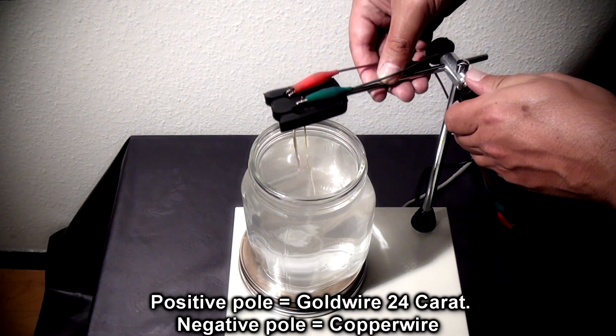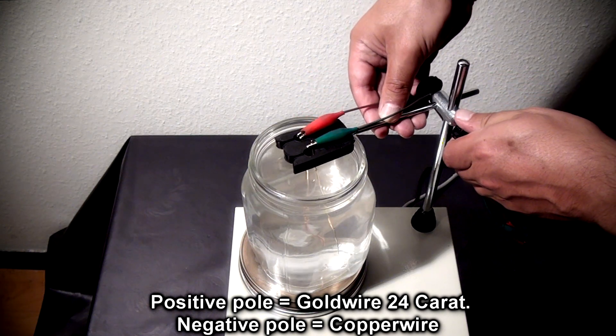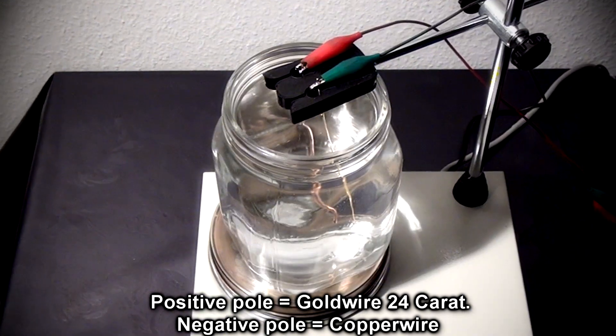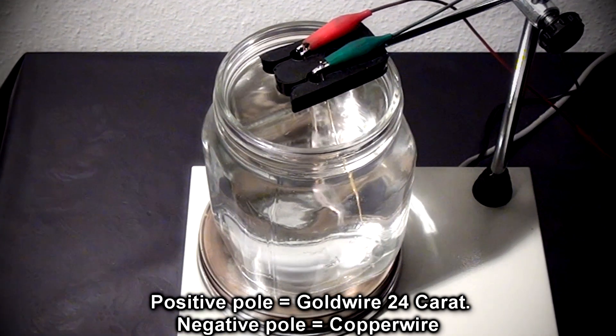On the negative pole is a 12 centimeter long and 2 millimeter thick copper wire. On the positive pole is a 12 centimeter long and 1 millimeter thick 24 karat gold wire.